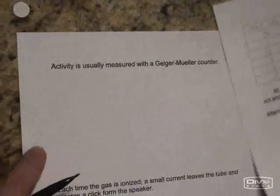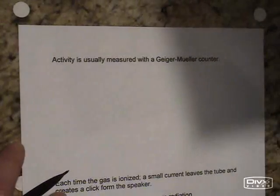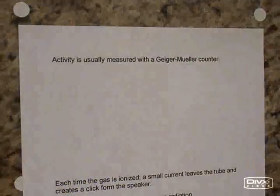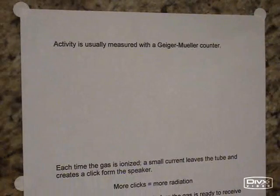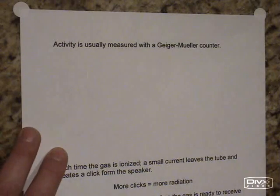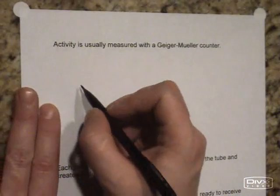So it turns out that activity is typically measured with a device called the Geiger-Mueller counter. I'm going to draw this device for you. The device is pretty simple.